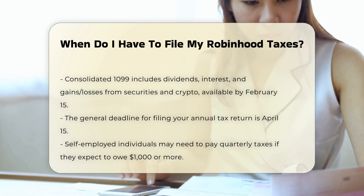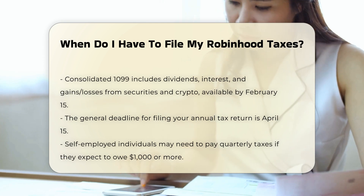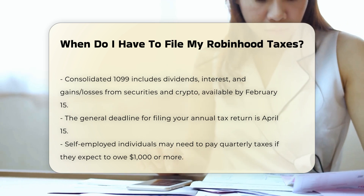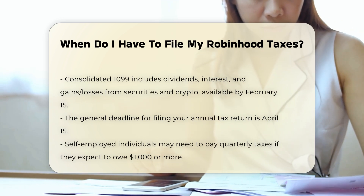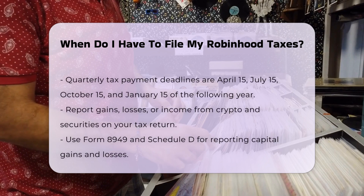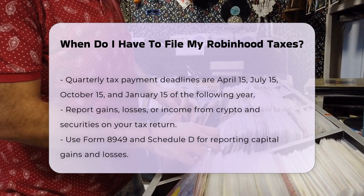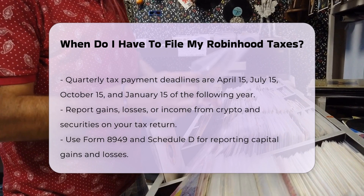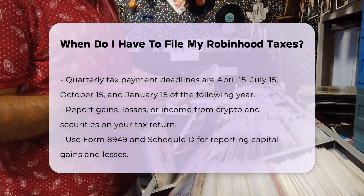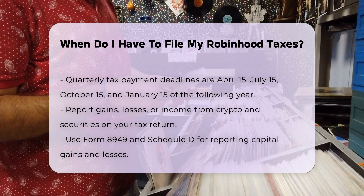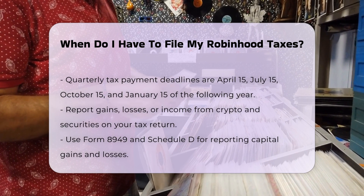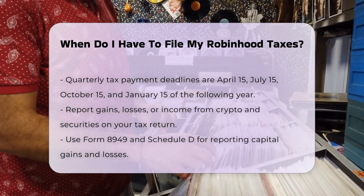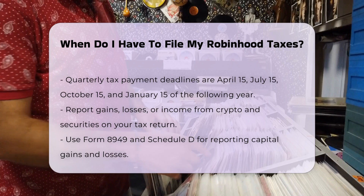Tax Filing Deadlines: the IRS requires that all tax returns be filed by a specific date each year. Here are the key dates. Tax Return Deadline: the general deadline for filing your annual tax return is April 15th. Quarterly Taxes: if you are self-employed and expect to owe $1,000 or more in taxes, you may need to pay quarterly taxes, which are due on April 15th, July 15th, October 15th, and January 15th of the following year.